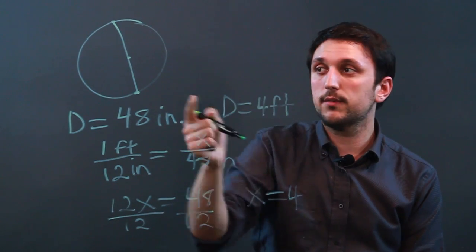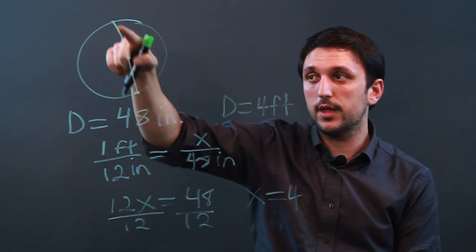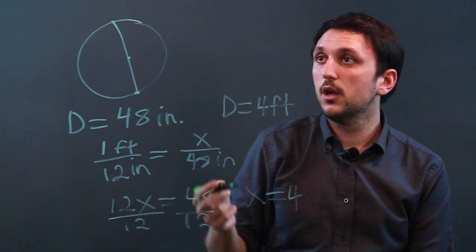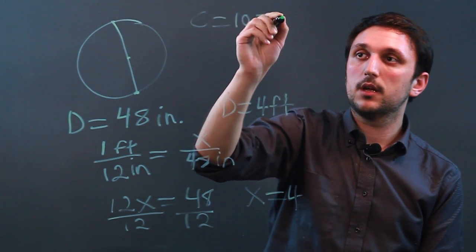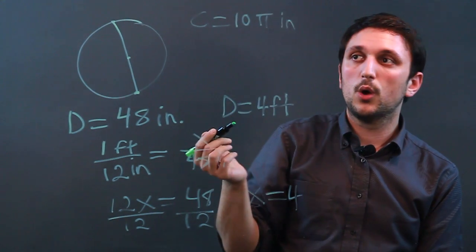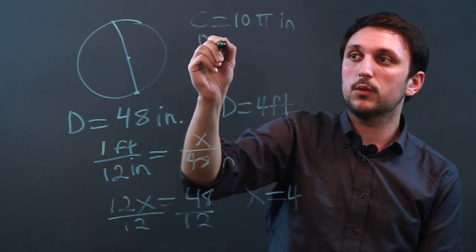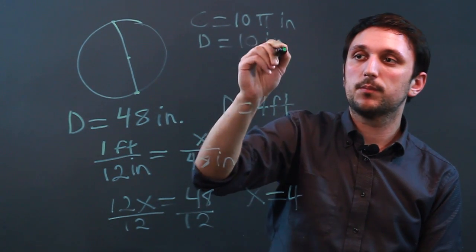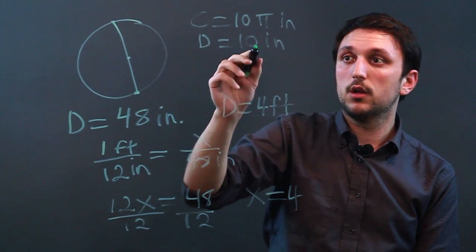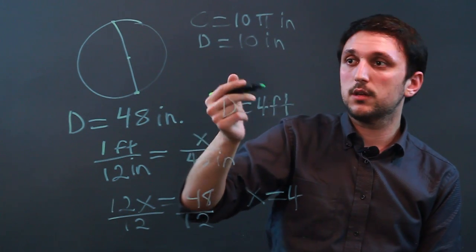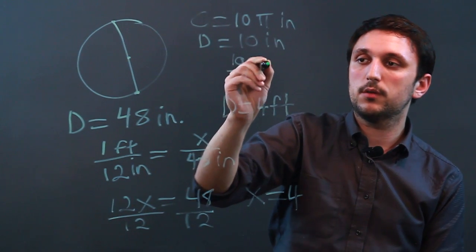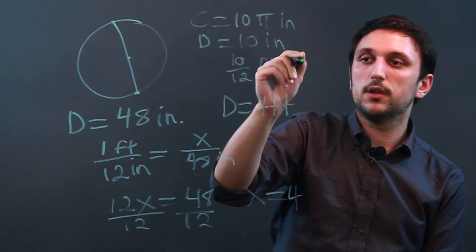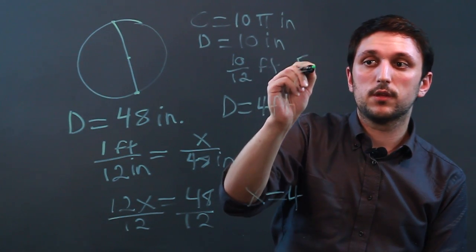Now if we were given only the circumference and we want to then get the diameter and figure out feet, we could say well circumference equals 10 pi inches. Which means that the diameter equals 10 inches. Which is 10 out of 12 feet. So 10 twelfths of a foot. Which can also be called 5 sixths of a foot.